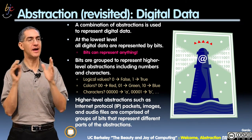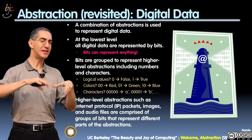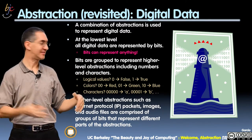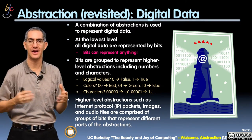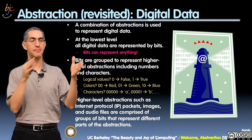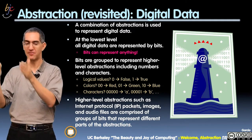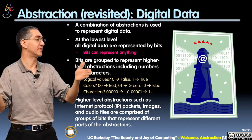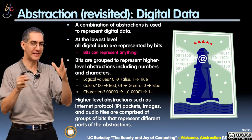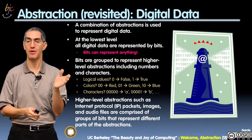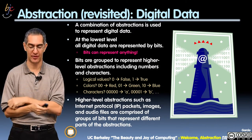Another really powerful idea: higher-level abstractions are usually done by a combination of bits, and those bits might encode different things — representing different parts of the abstraction.